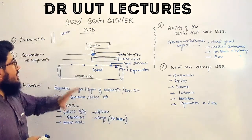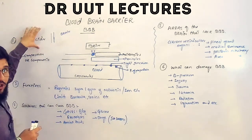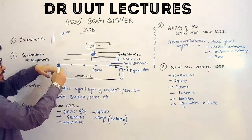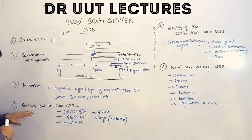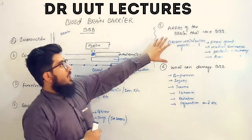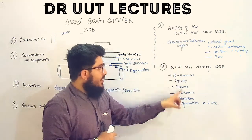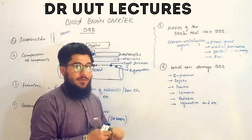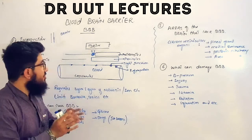In today's tutorial we'll discuss the blood brain barrier. We'll start from the introduction of the blood brain barrier, then the composition or components that make the blood brain barrier, and its functions. After that we'll discuss the substances that can cross it, the areas of the brain that lack the blood brain barrier, and the factors that can damage the blood brain barrier.